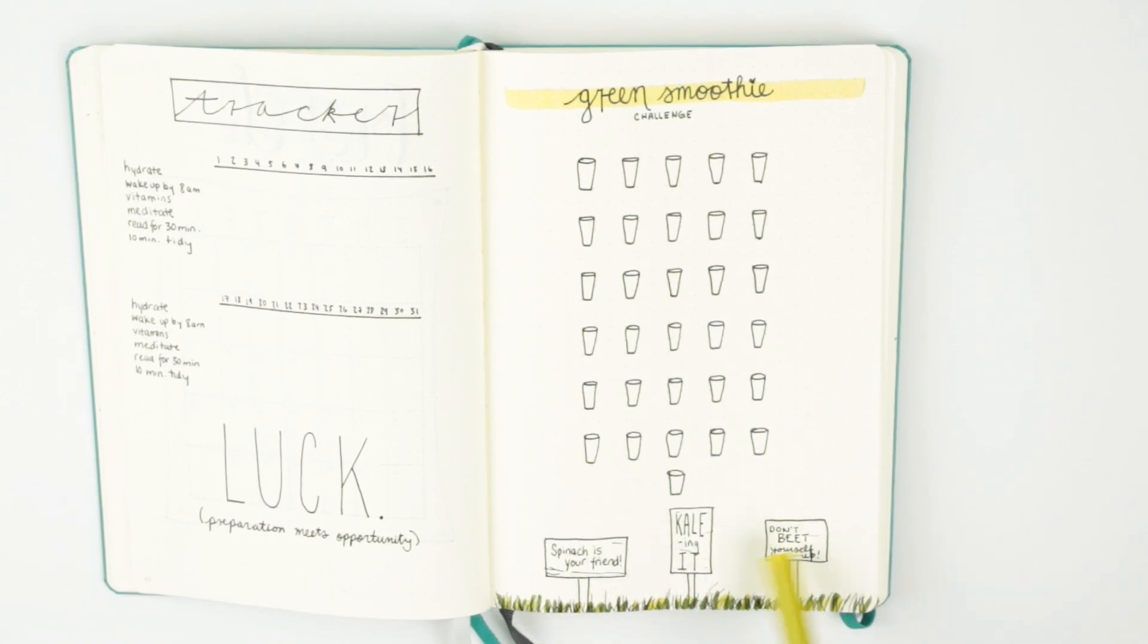So spinach is your friend. Kale-ing it. Ha ha ha, so funny. And don't beat yourself up. To be honest I don't think I'd ever put a beet in a green smoothie, I'm not a huge fan of beets, but I really like this pun.